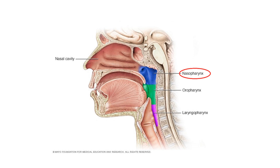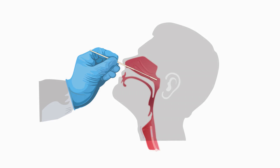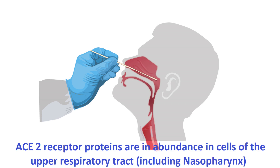The nasopharynx is the uppermost part of the pharynx located right behind the nasal cavity. The nasopharyngeal swab consists of secretions and cells collected from that region using a nasal swab. The main reason this swab is used to test for COVID-19 is because ACE2 receptor proteins are found in abundance in the cells lining the upper respiratory tract, including the nasopharynx. Since ACE2 receptors are the virus's main entry point, the viral population in the upper respiratory passage is significantly high in an infected individual, especially during the peak of infection.